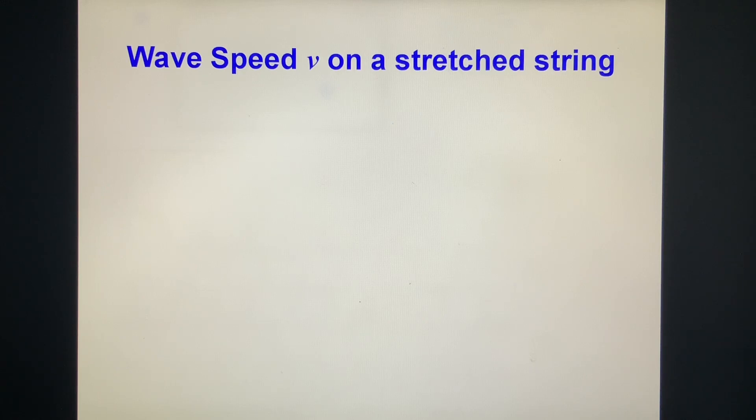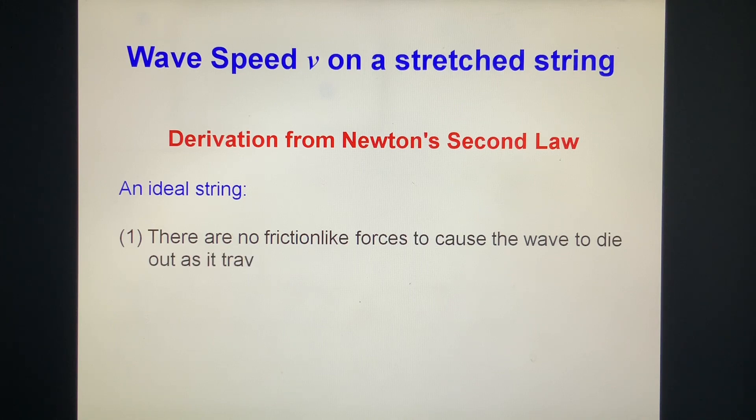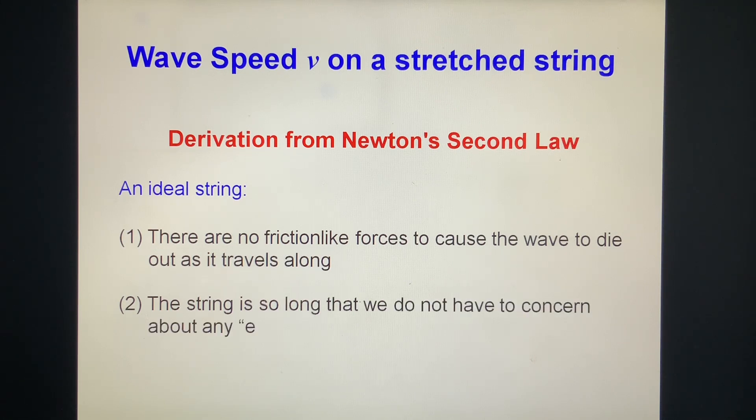The wave speed V on the stretched string. Derivation from Newton's second law. An ideal string: 1. There are no friction-like forces to cause the wave to die out as it travels along. 2. The string is so long that we do not have to concern about any echoes that might rebound from its front end.